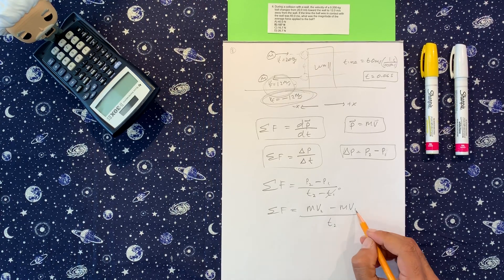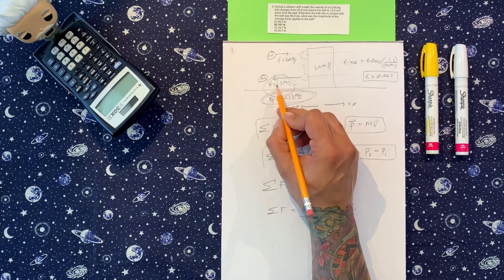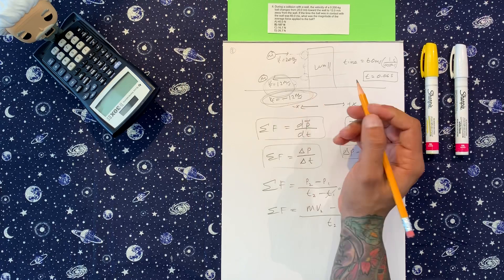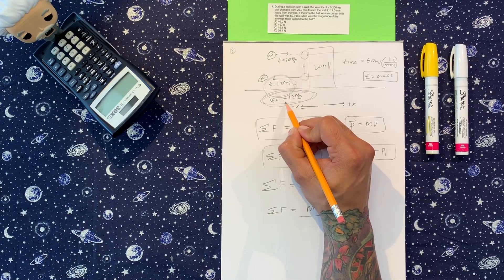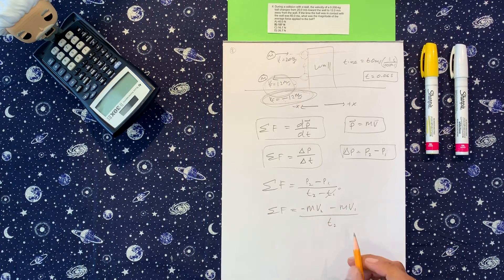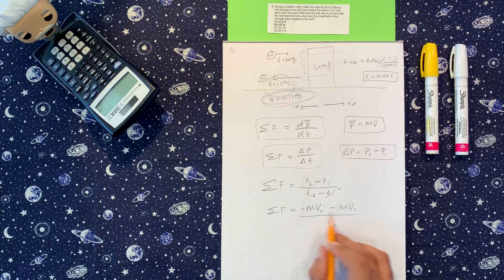This velocity initially is positive, but this velocity final, even though it wasn't given negative, we're not going to let them stomp us. We got negative 12. We need to convert this to negative or we just put a negative in front of the velocity. So this is where they get you also.